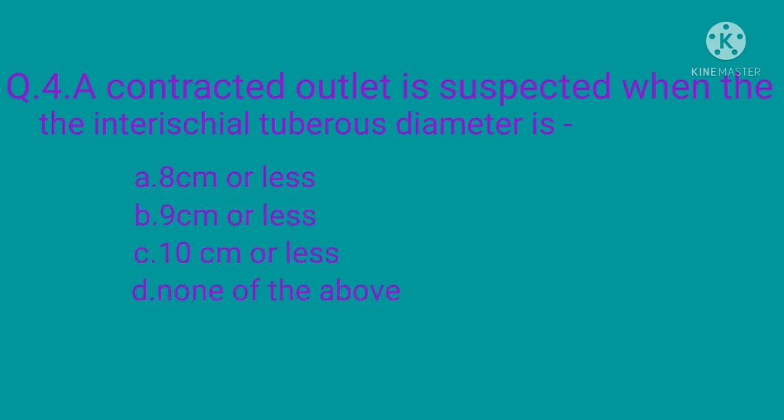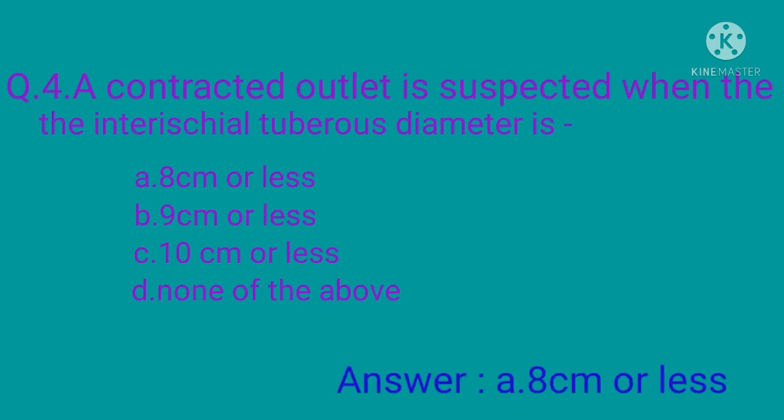Question 4: A contracted outlet is suspected when the intertuberous diameter is — option A: 8 centimeter or less, option B: 9 centimeter or less, option C: 10 centimeter or less, option D: none of the above. The correct option is option A: 8 centimeter or less.